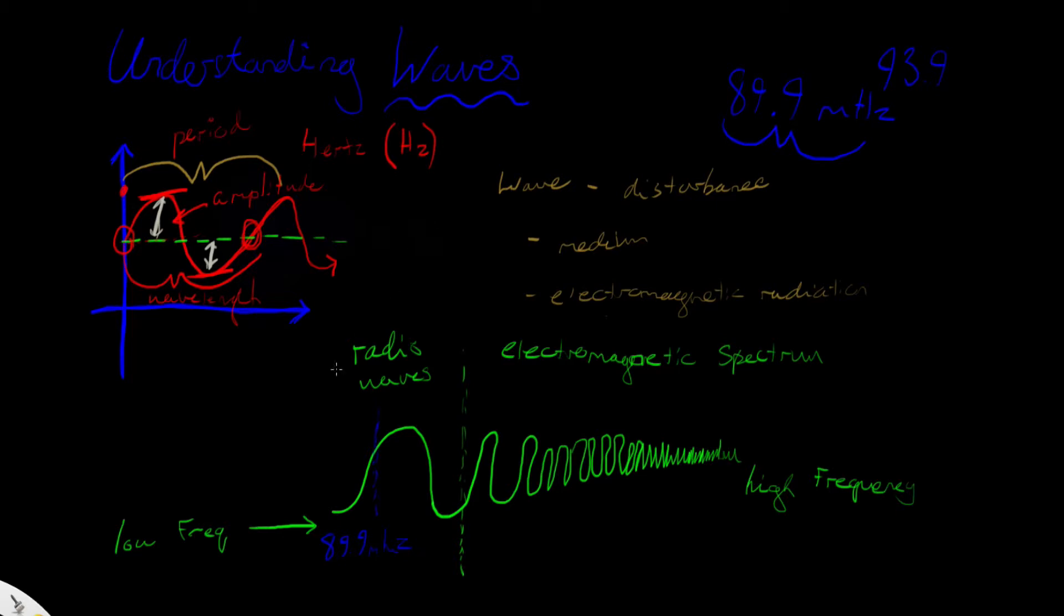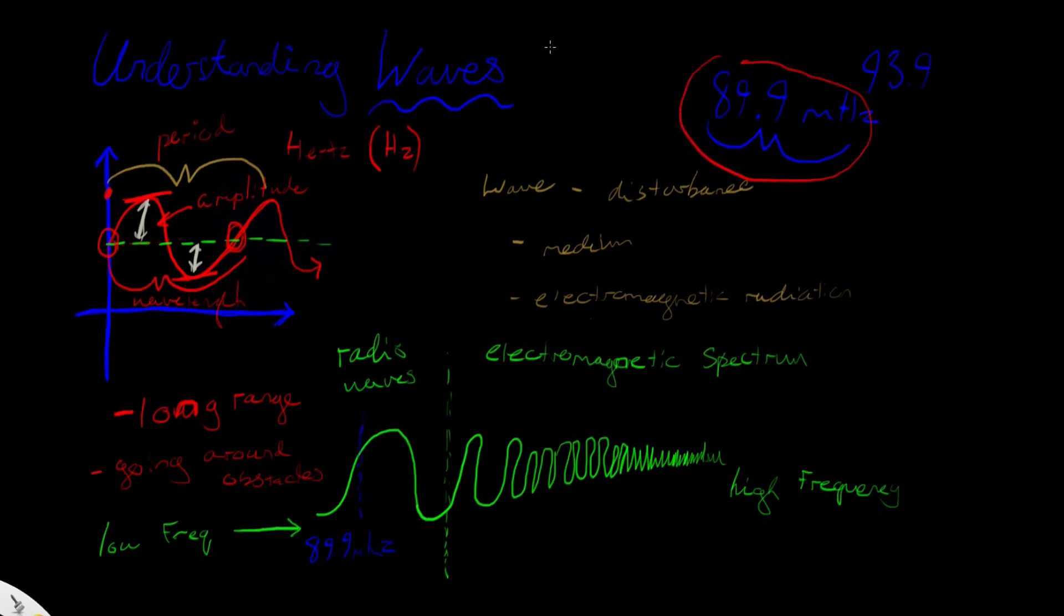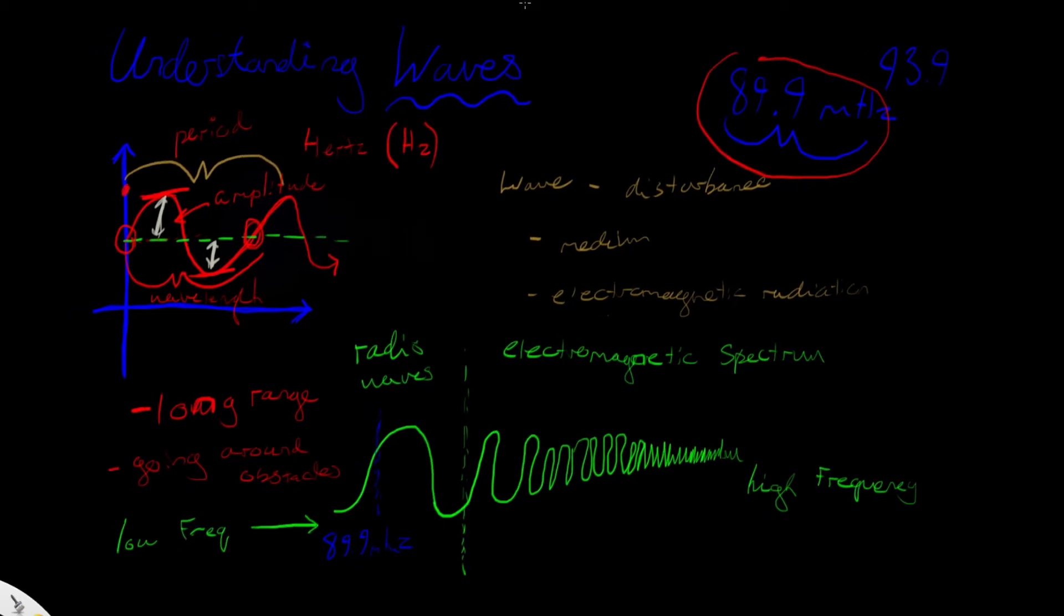You want to listen to another radio station, say 93.9. Now you're listening to radio waves that have a slightly higher frequency, therefore distinguishing it from the 89.9 megahertz band. So those are common music radio frequencies, these radio stations, and that's what they're used for. Before I go on anymore, I want to say that low frequency waves generally have different characteristics than high frequency waves. So low frequency waves generally have long range.